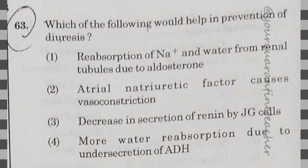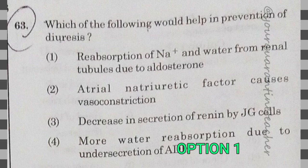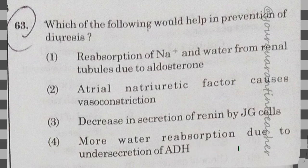63rd question: which of the following would help in the prevention of diuresis? Option 1 — reabsorption of sodium and water from renal tubules due to aldosterone — is the right answer.